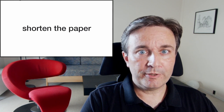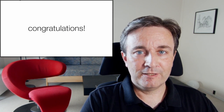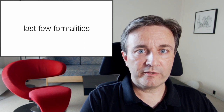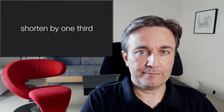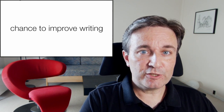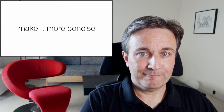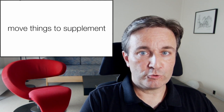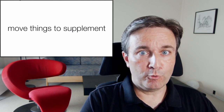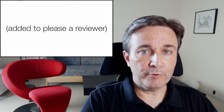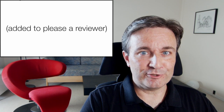Shorten the paper. Often the peer review process ends like this: 'Congratulations, your paper has been accepted. There are just some last few formalities that you need to take care of first' — one of them being: shorten the paper by one third. Before you scream, remember this is your chance to improve the writing. It allows you to make it more concise and better. It allows you to move some things to supplementary material that were perhaps not that important, including some of the things you added to the manuscript only to please the reviewers. Remember, at this point, nobody but the editor is looking at it.